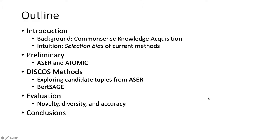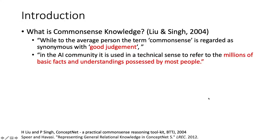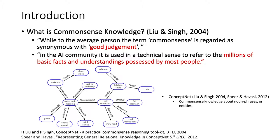First, let's talk about common sense knowledge. According to the pioneer work ConceptNet, common sense is regarded as good judgment. There are facts and understandings possessed by most people. ConceptNet has gone through several rounds of development and is now a large-scale graph containing common sense relations among noun phrases or entities.